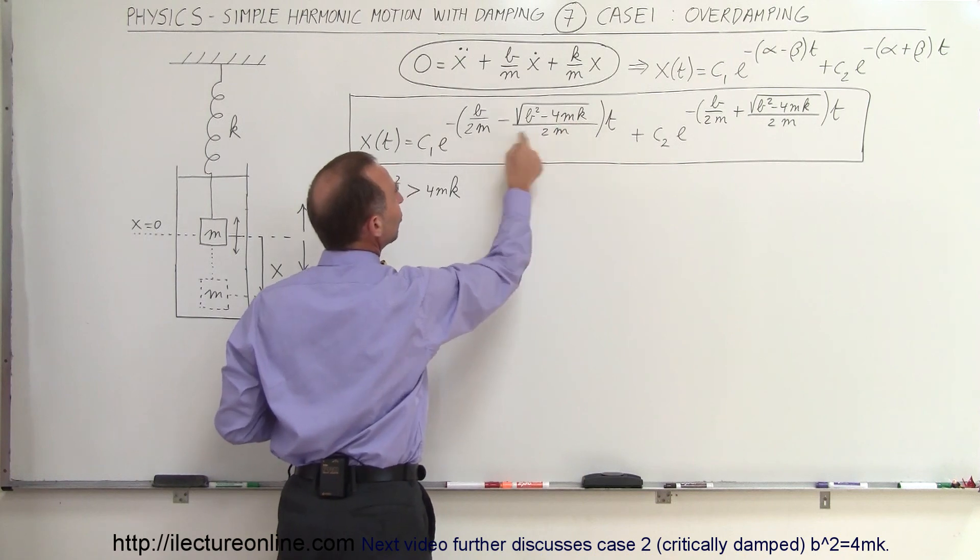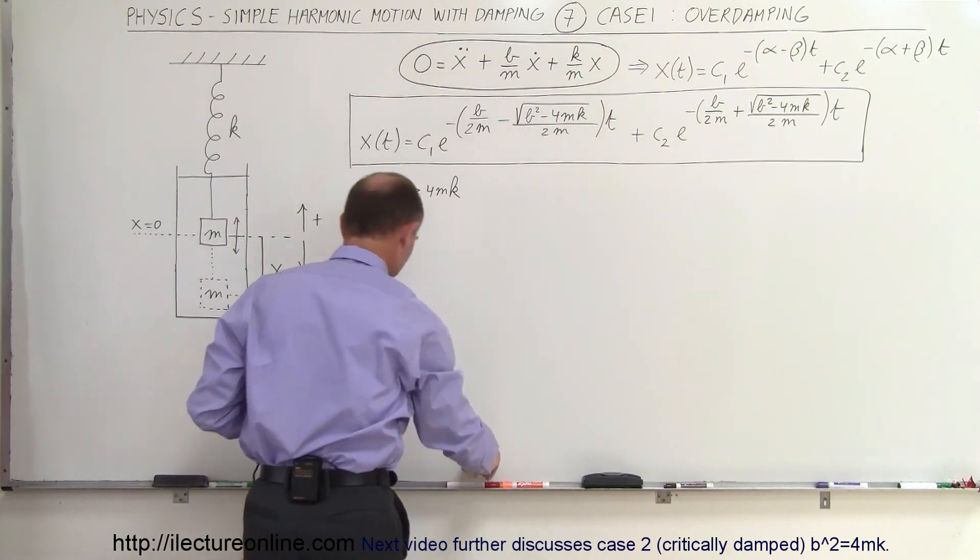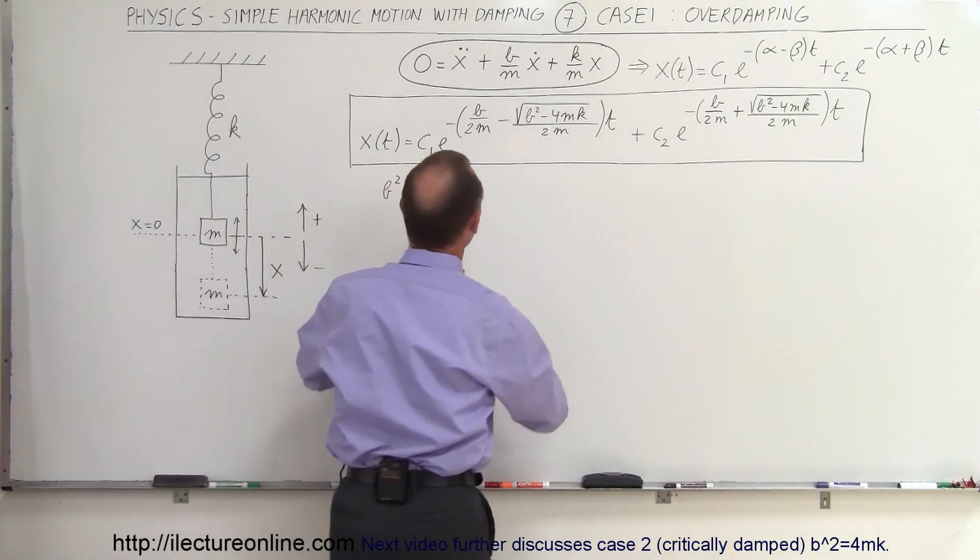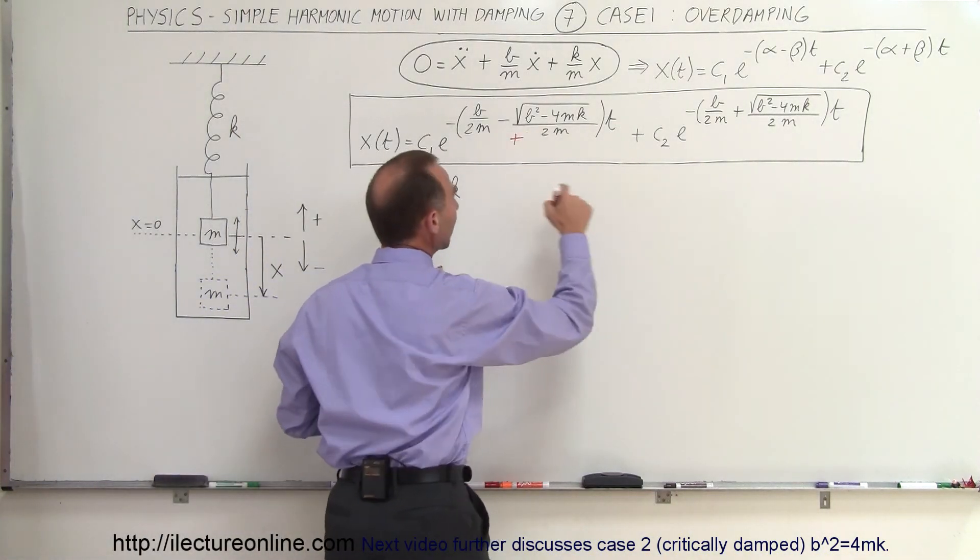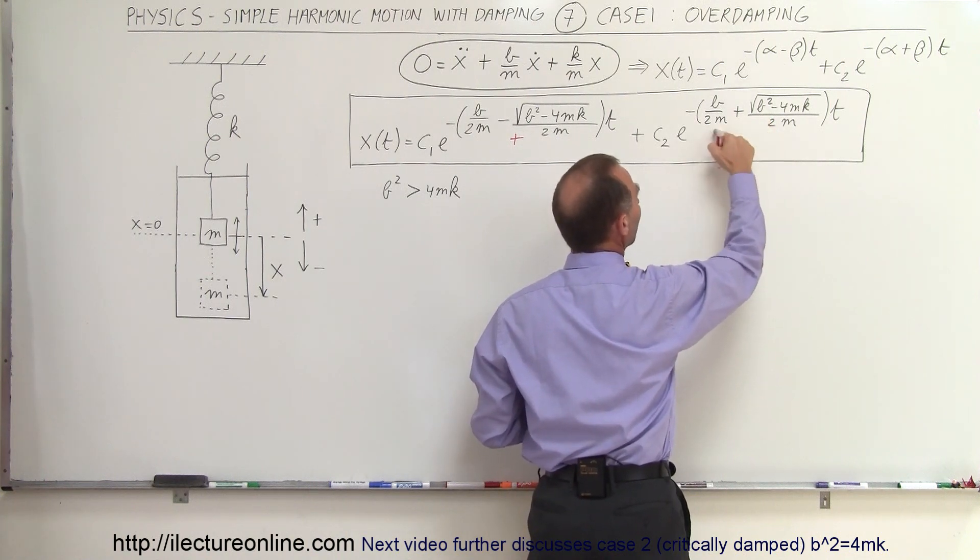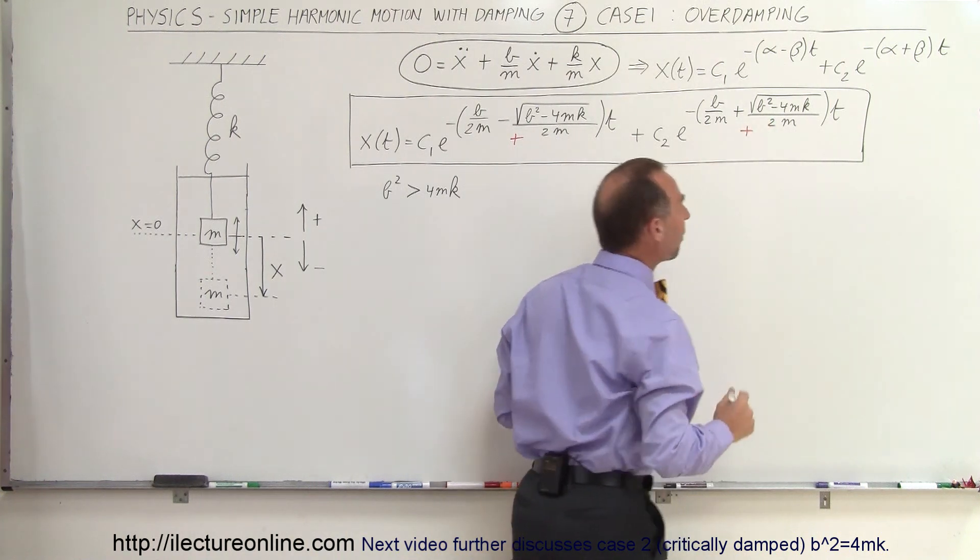But this will always be less than this, which means that this will be a positive quantity. So this will always be a positive quantity. Notice since this is greater than zero and this is greater than zero, this will also be a positive quantity.